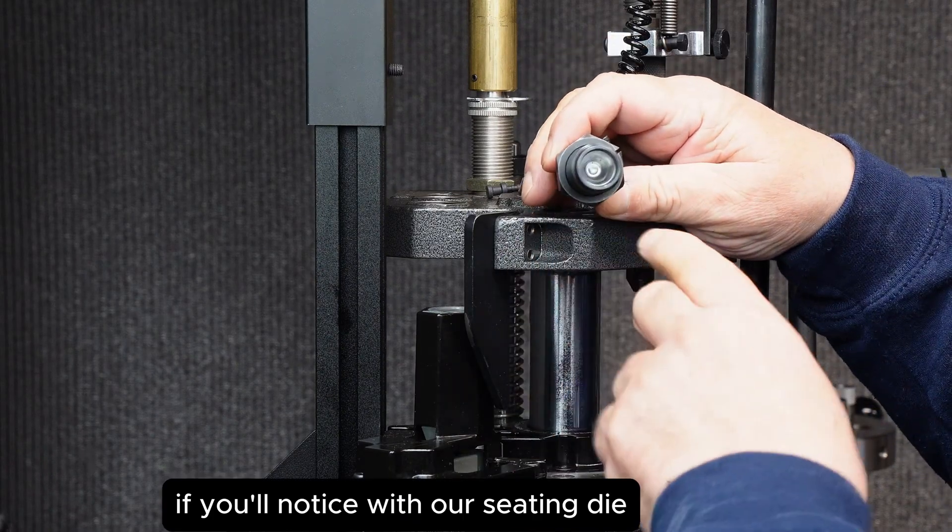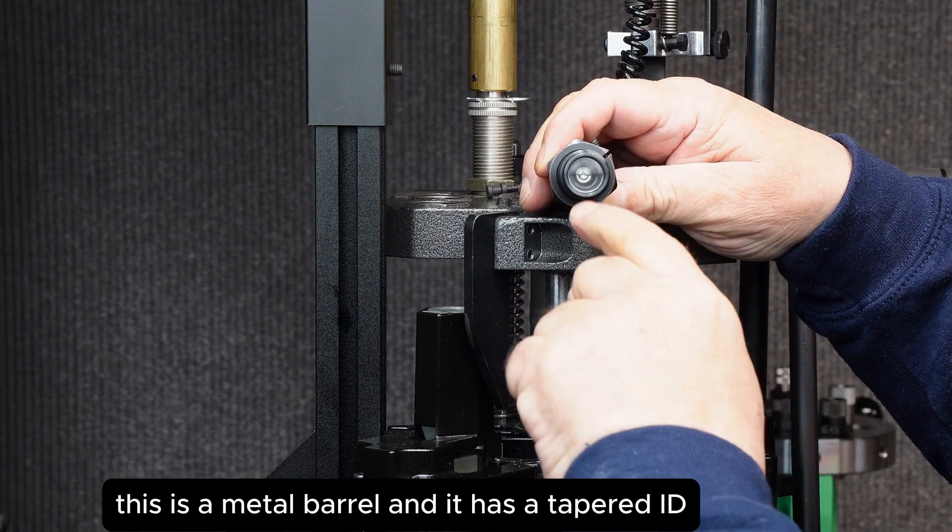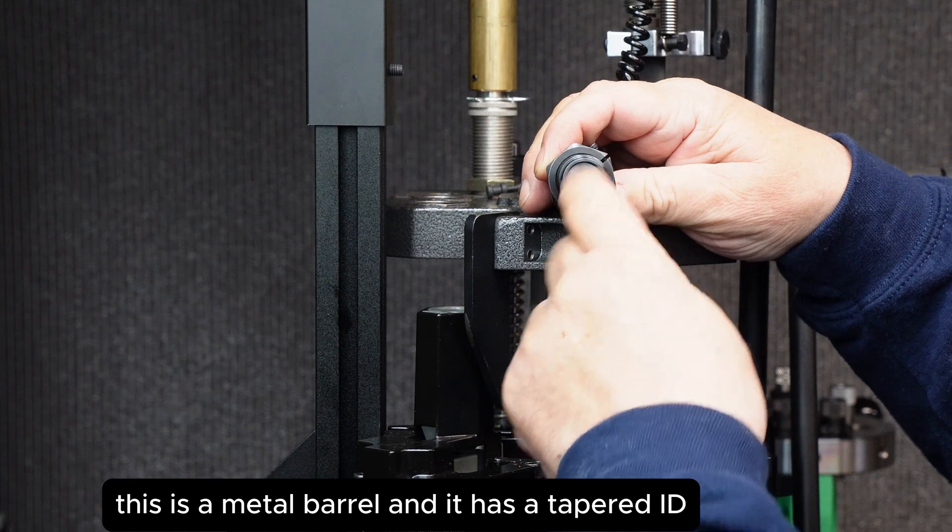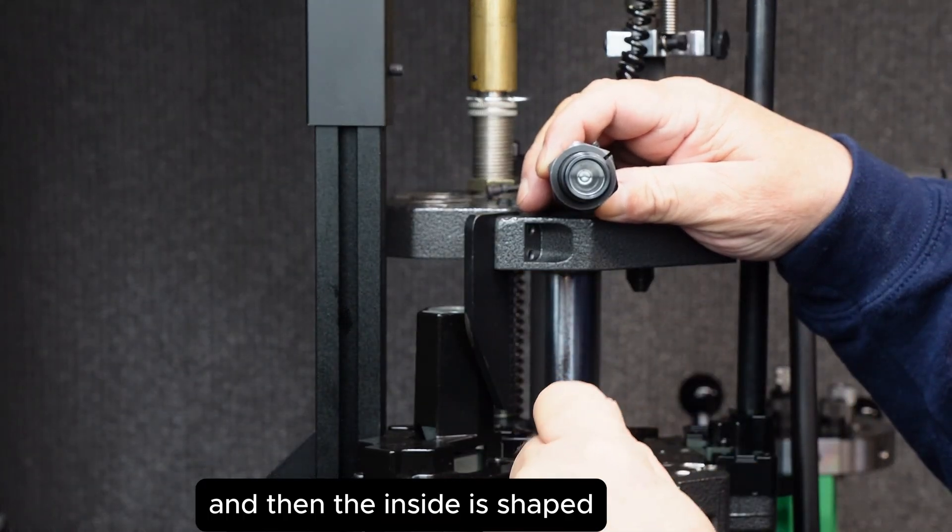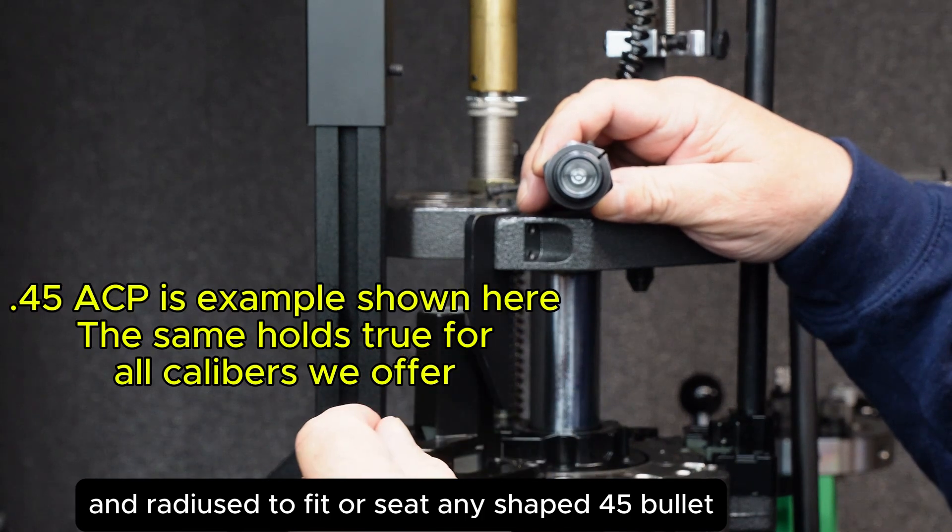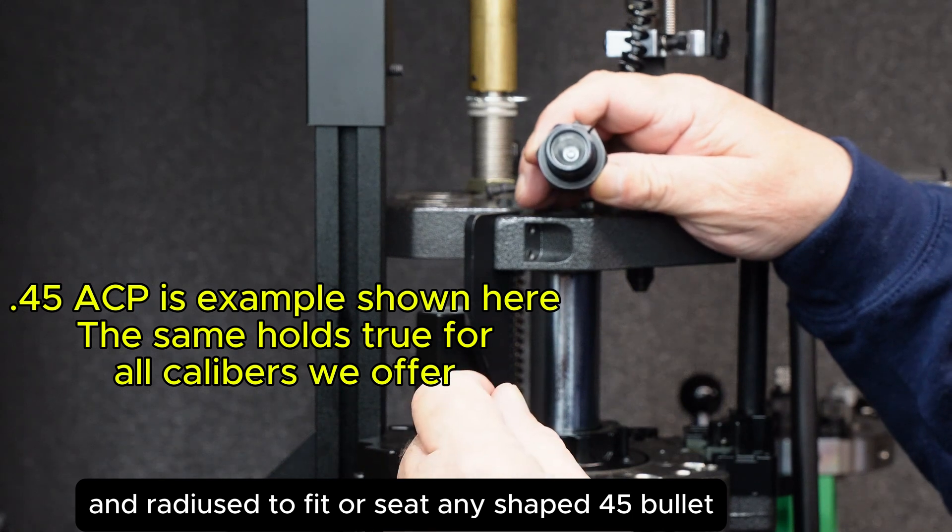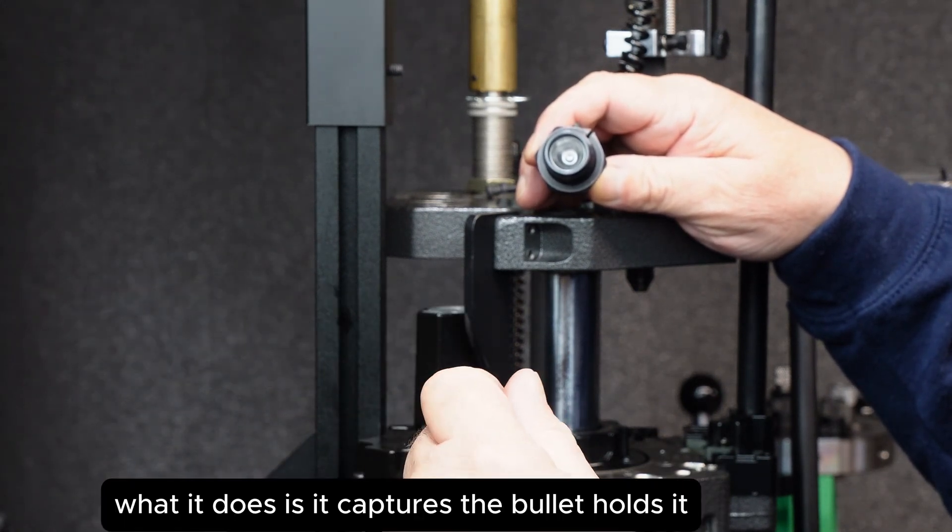Without seating die, this is a metal barrel and it has a tapered ID, and then the inside is shaped and radiused to fit or seat any shape 45 bullet or 44 for that matter.